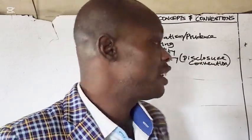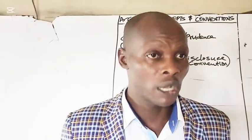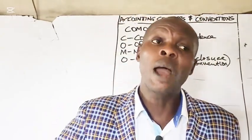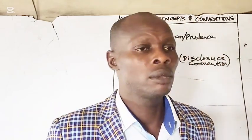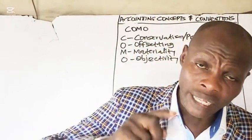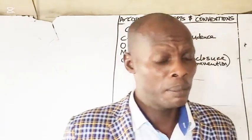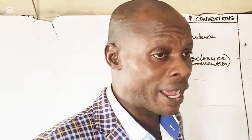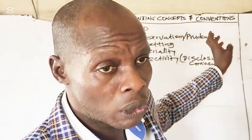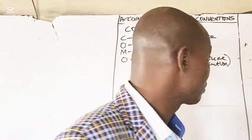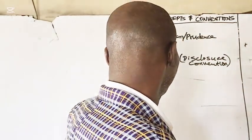Conservatism, also called prudence convention, requires an accountant to anticipate losses but never to anticipate profits. For example, making a provision for doubtful debts is done in compliance with the prudence concept, so as not to recognize an anticipated or unrealized profit.